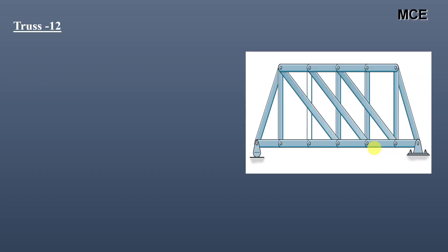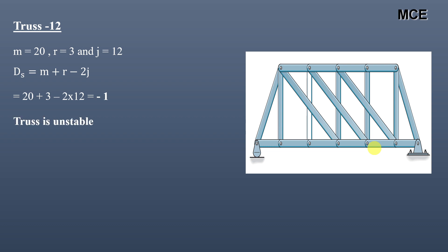For truss twelve, this truss has 20 members, 3 reactions, and 12 joints. ds = −1, so this truss is again unstable.